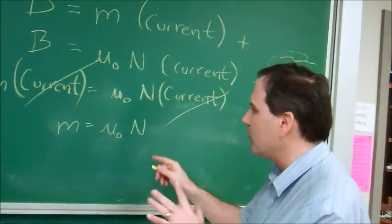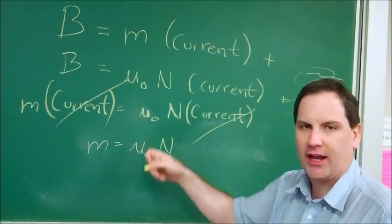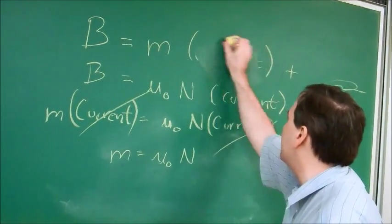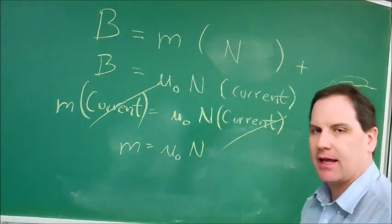In the second one, it's almost the same thing, except in the second one, the currents and the N's change. So instead of this being our equation for our plot being m times current, it's going to be m times N.